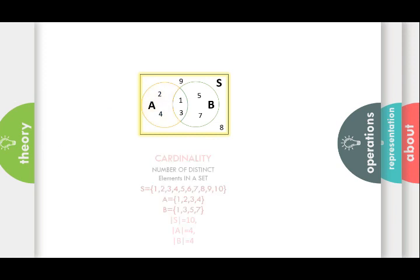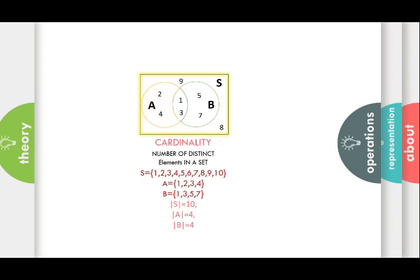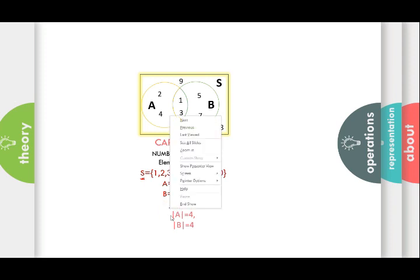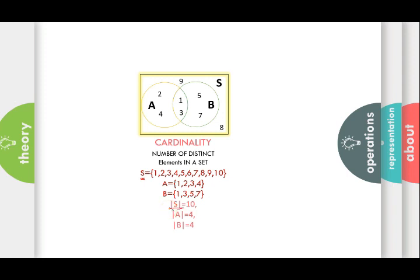The next operation is cardinality. Cardinality is a simple operation — just finding the number of distinct elements present in a set. If the universal set S has numbers from 1 to 10, cardinality of S is represented as |S| = 10. Cardinality of set B is 4, and cardinality of set A is 4.